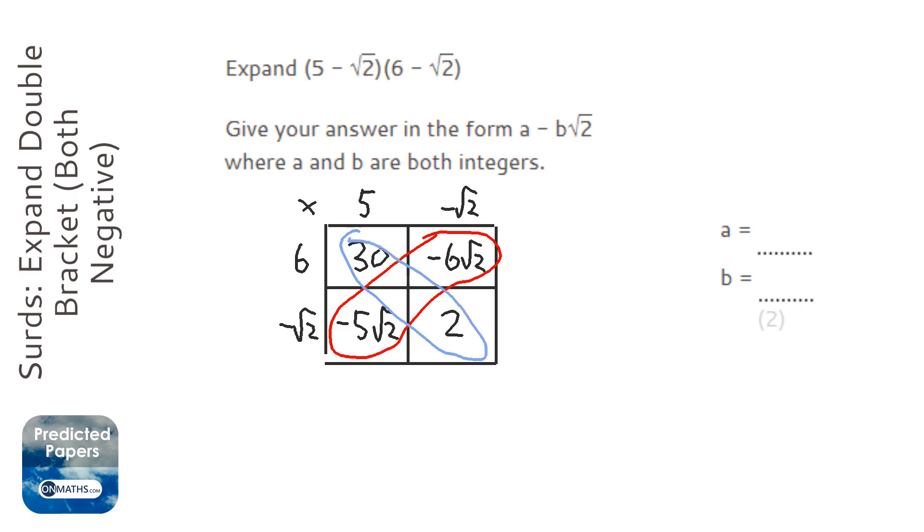So 30 plus 2 is 32, and minus 6 root 2 minus 5 root 2 is going to be minus 11 root 2.